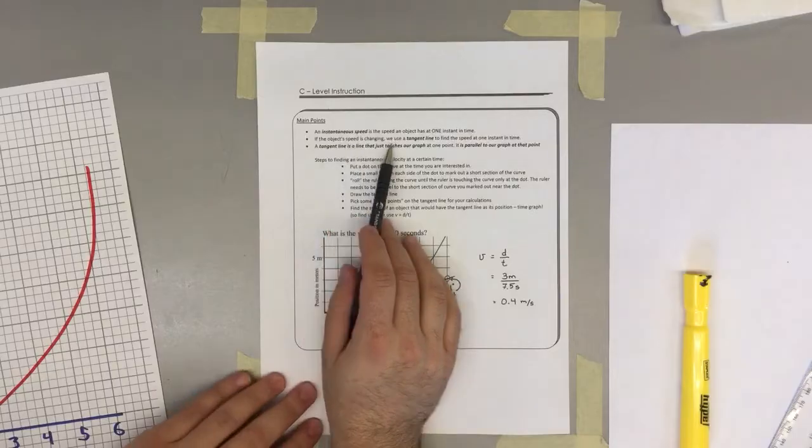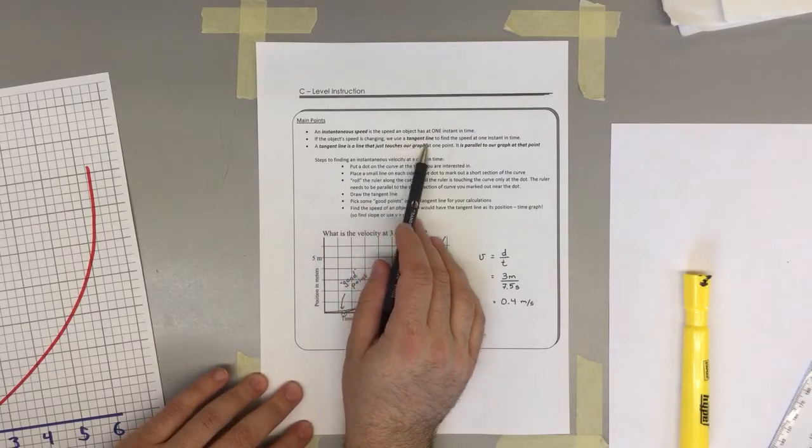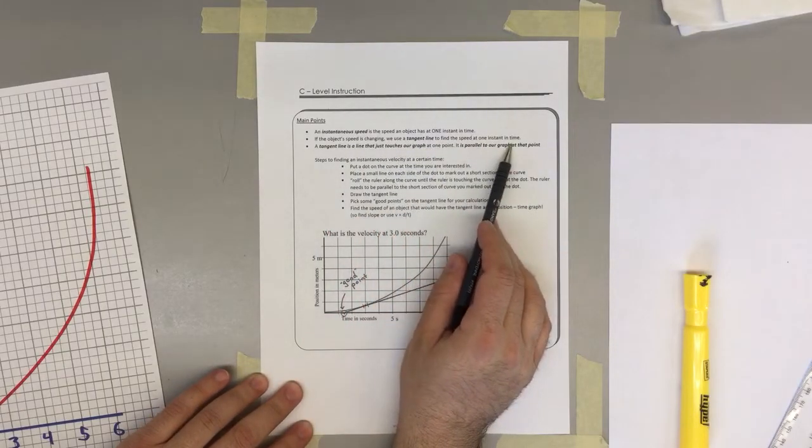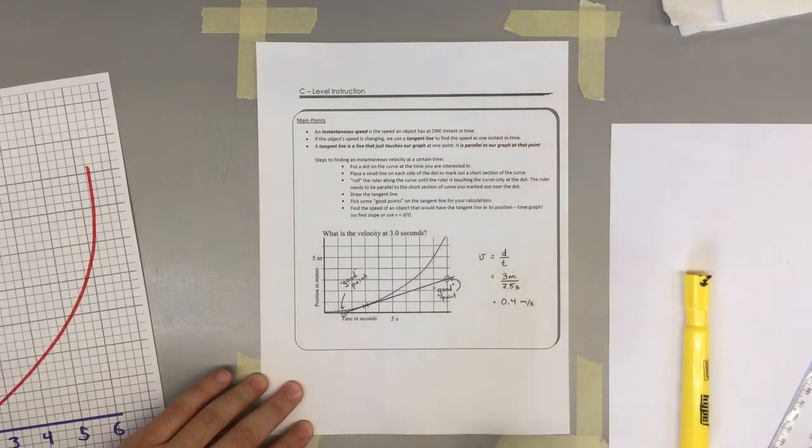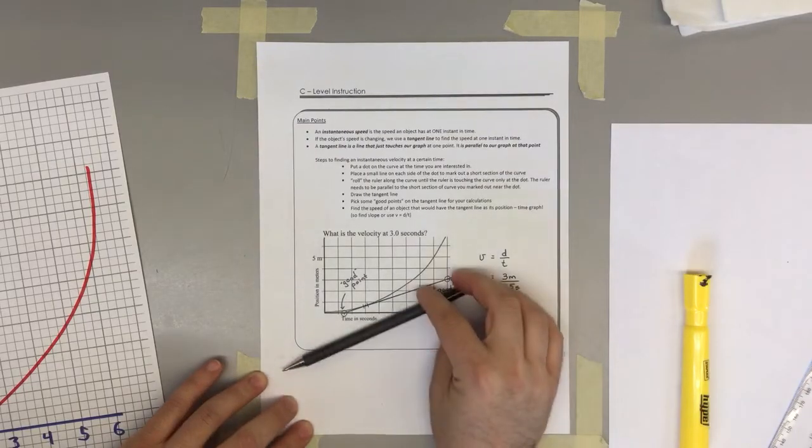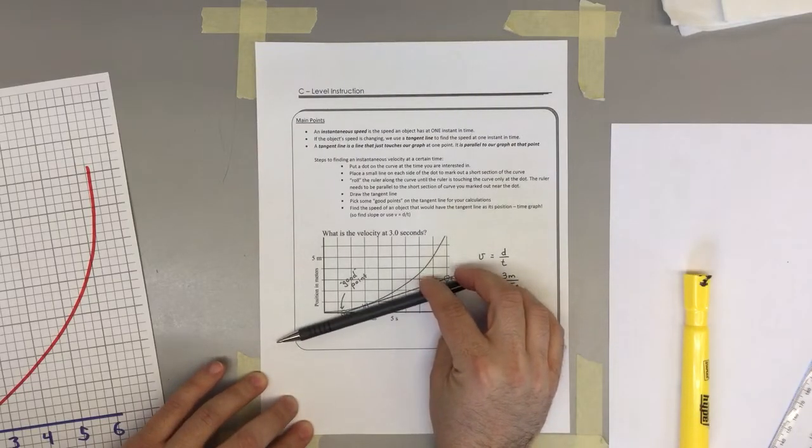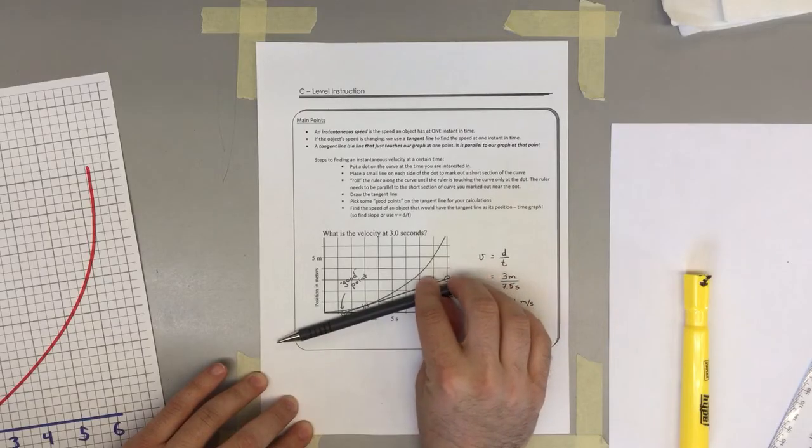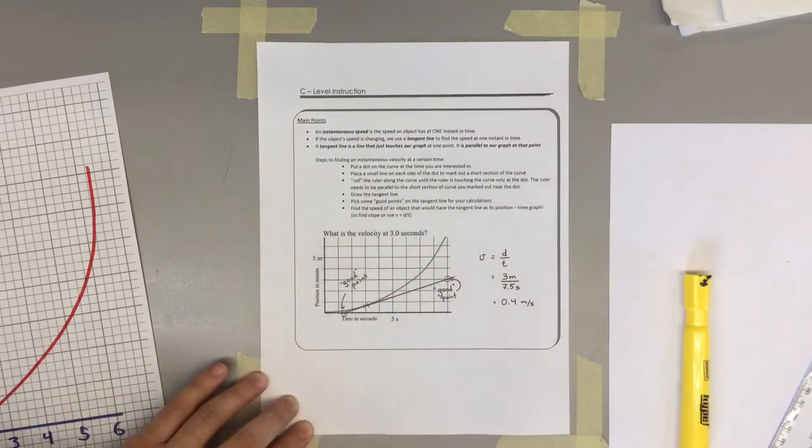So if an object's speed is changing, we use a tangent line to find the speed at one instant in time. I think it was grade 9 math that you guys learn tangent lines. Basically, a tangent line is something that touches a curve or a line at only one point. So a tangent line is a line that touches our graph at one point. It is parallel to our graph at that point.